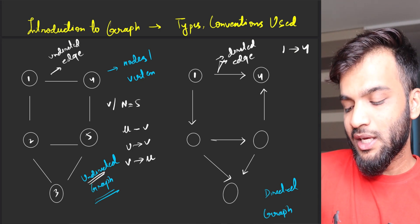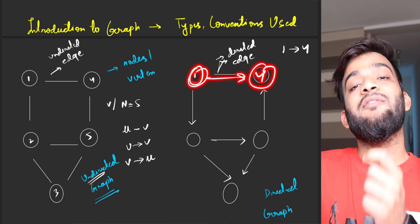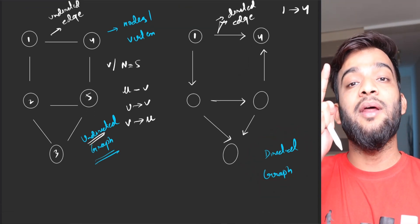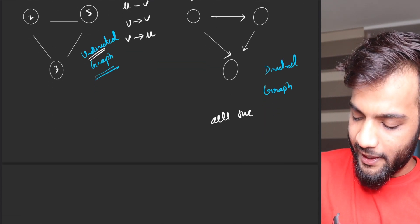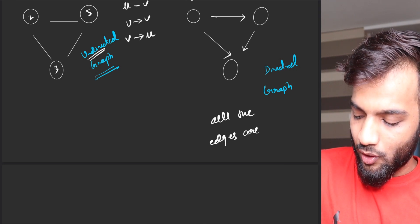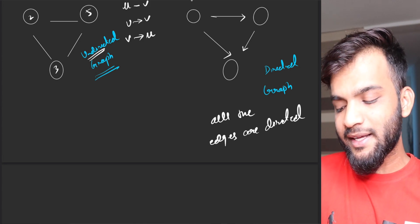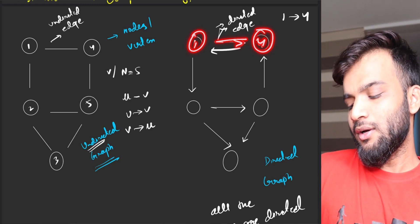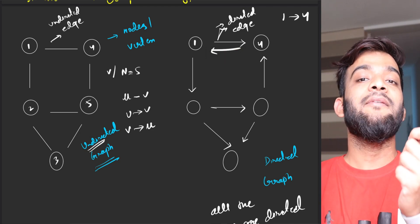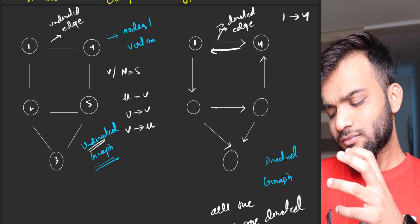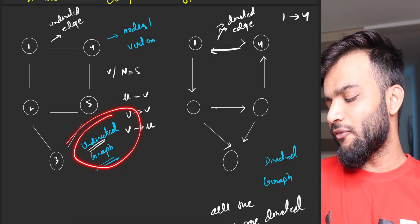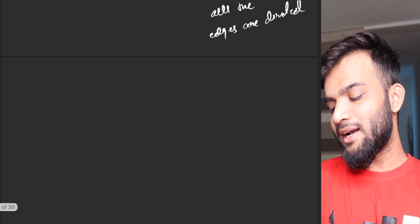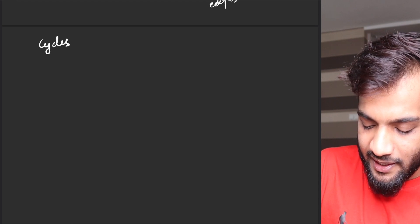Imagine if I number nodes 1 and 4 — I can say there is an edge from 1 to 4, which means if I'm standing at 1 I can go to 4, but if I'm standing at 4 I cannot come back to 1. A directed graph is a graph where all the edges are directed. You can also have bi-directional directed edges between two nodes. So those are the two kinds of graphs: undirected and directed.